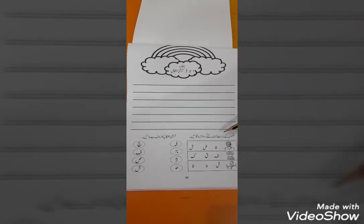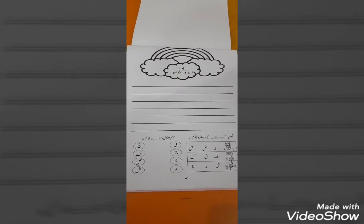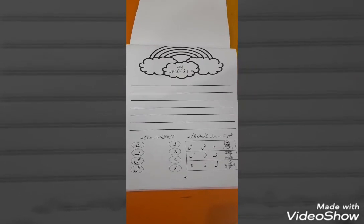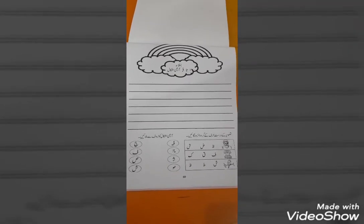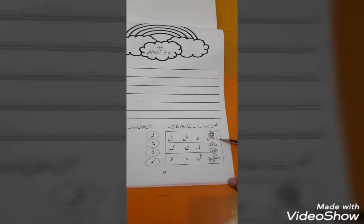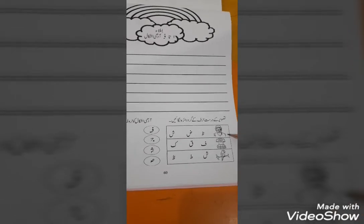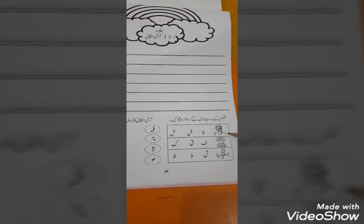Tasveer ke drus tharp ke girh daira lagay. First, you will recognize this picture. Which picture is this? Zaheer. Very good. This is Zaheer picture.